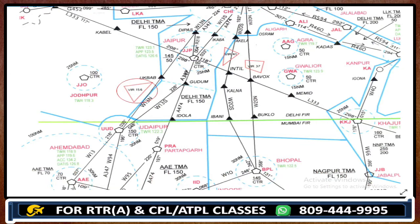Let's have a look at another one — VIR41. So this is the restricted area of Delhi, number 41. Similarly, VIR37 is restricted area of Delhi number 37. Let's try to find out some more.